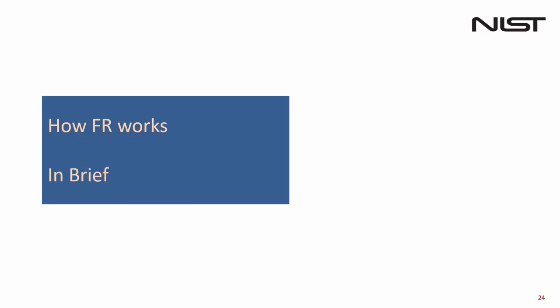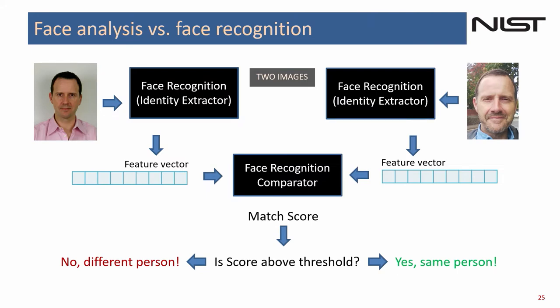How does face recognition work in brief? We have essentially a comparison of two photos. The algorithms don't know anything about the individuals — they are generic extractors of identity information from photographs. Two photos go in, the same apparatus extracts what's called a feature vector of identity information, puts them into a comparator, and the comparator renders a score saying how similar the two faces are. If that's a high score, you might accept the decision as 'same person'; if it's a low score, 'different person.' Those feature vectors are proprietary.